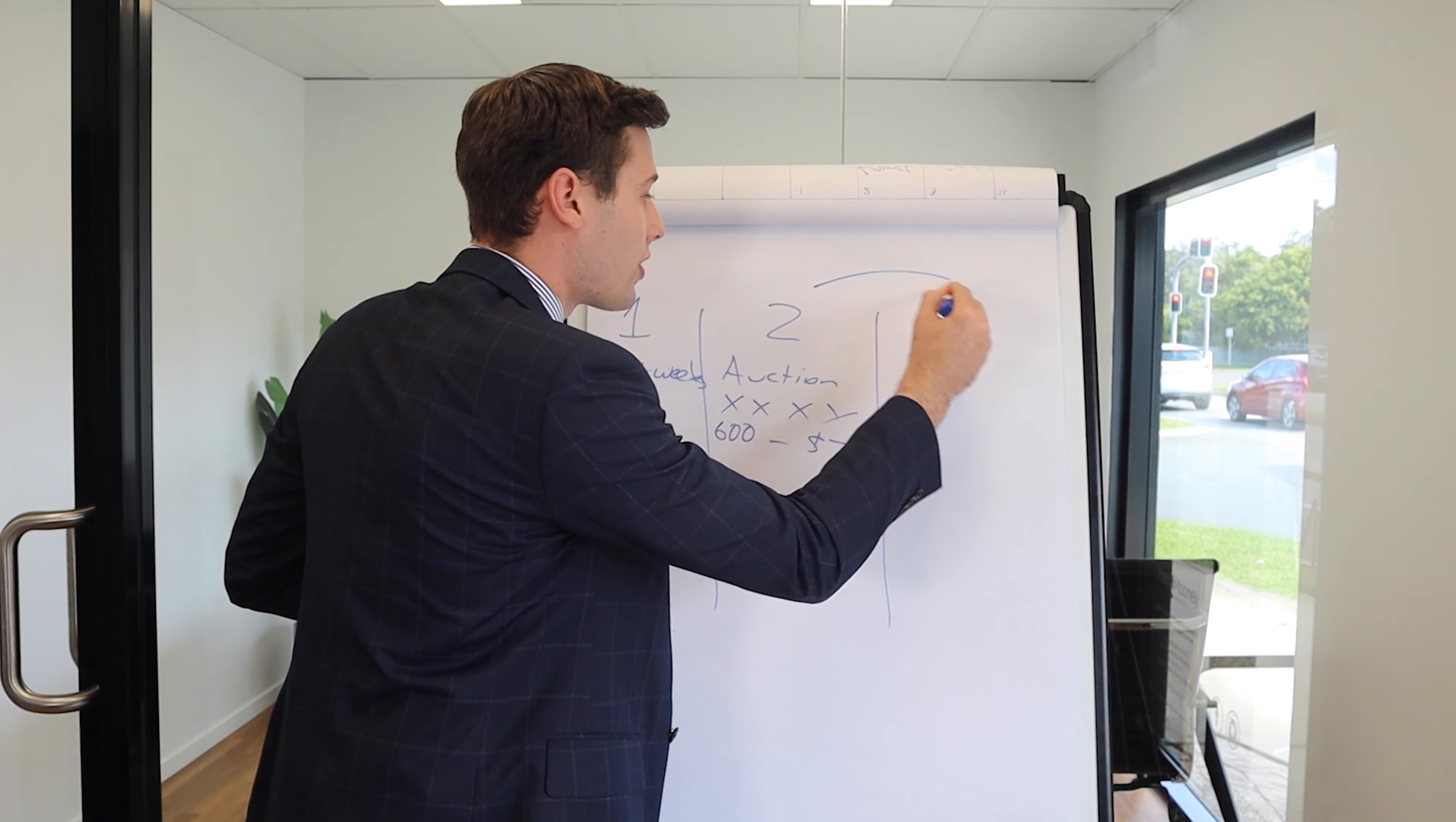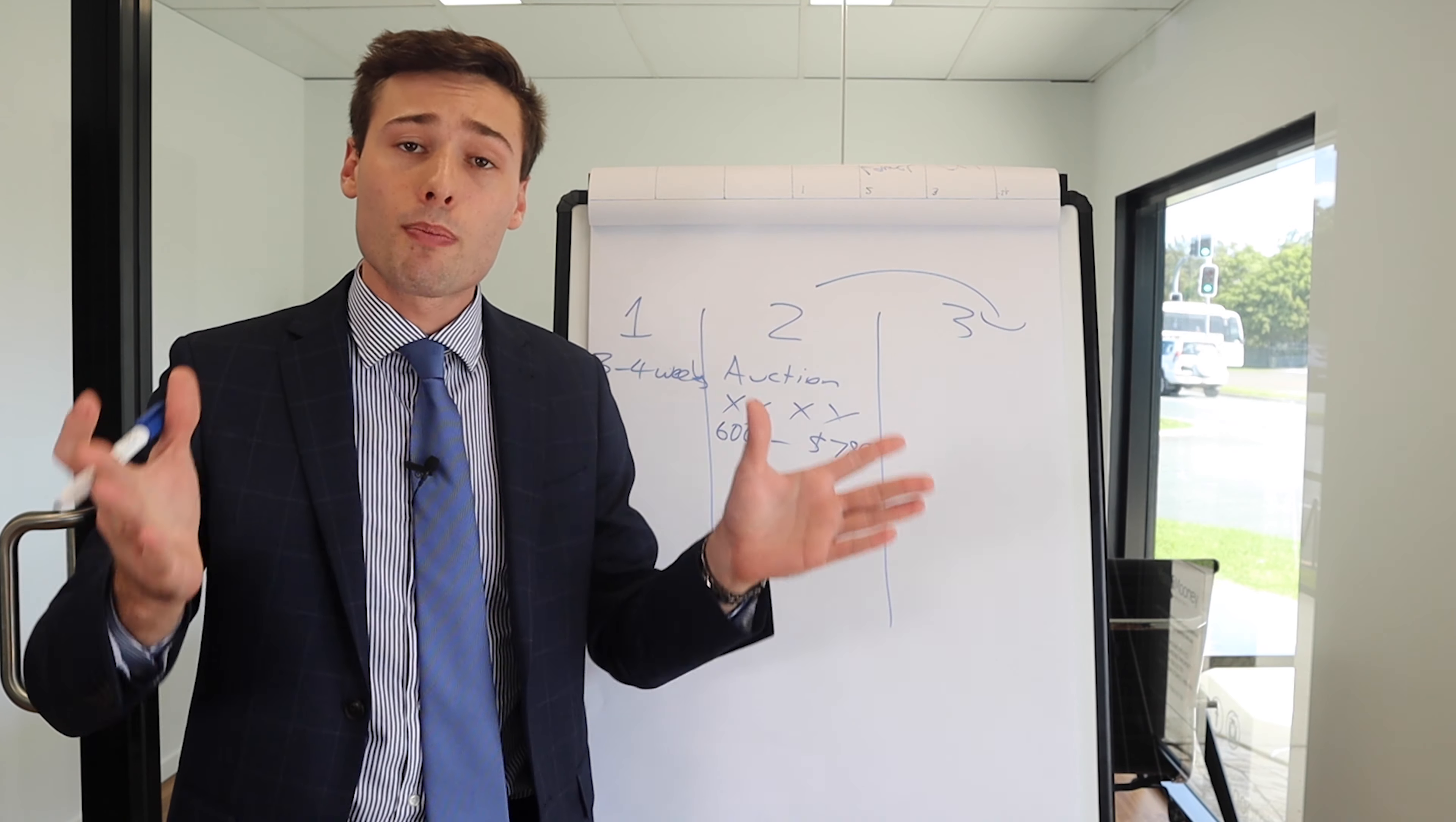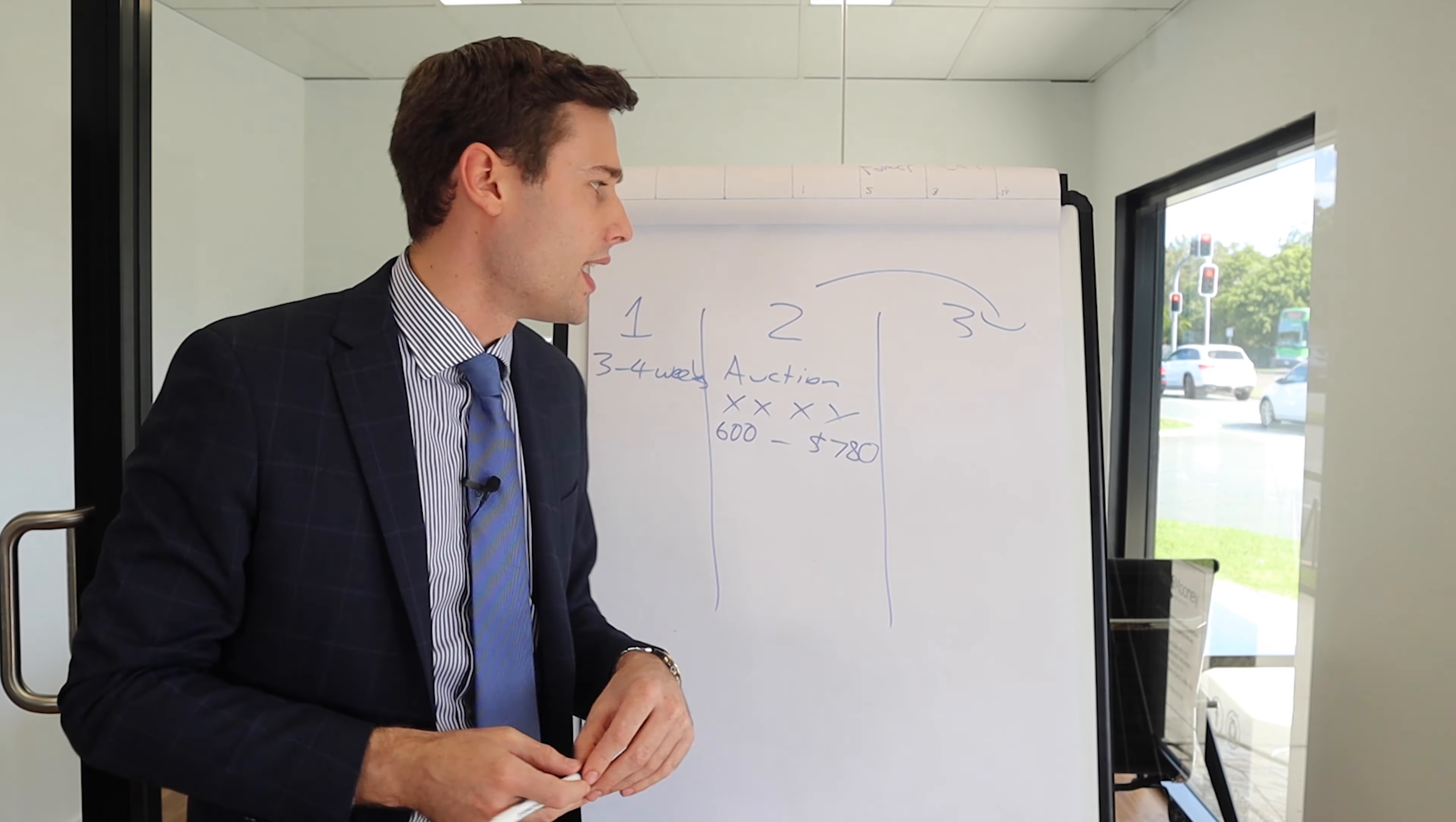Now that leads me into stage three. So stage three is should the property, let's just say the reserve price is $600,000, should $550,000 come on the day, we simply pass the property in and convert it over to stage three. So that's when we pass it in and we set another deadline for the buyers. Generally 24, 48 hours. Ladies and gentlemen, the property's passed in today. We're simply going to take offers to the sellers in the next one or two days, whatever it may be. So you generally get a lot of interest there. And if we do go to stage three, normally we would look at securing a sale very shortly after the auction because of all the competition or the interest.